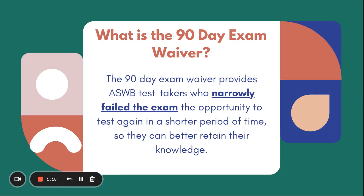So what is the 90-day exam waiver? When you take the exam, you are given a score sheet printed out for you that says either you passed or you failed. If you are not successful and you do not pass the exam, you have a 90-day waiting period before you can sit to take the test again, to retest. However, there is an exception to this, and that is with the 90-day exam waiver. If you are approved, you will have the opportunity to test again sooner than 90 days.